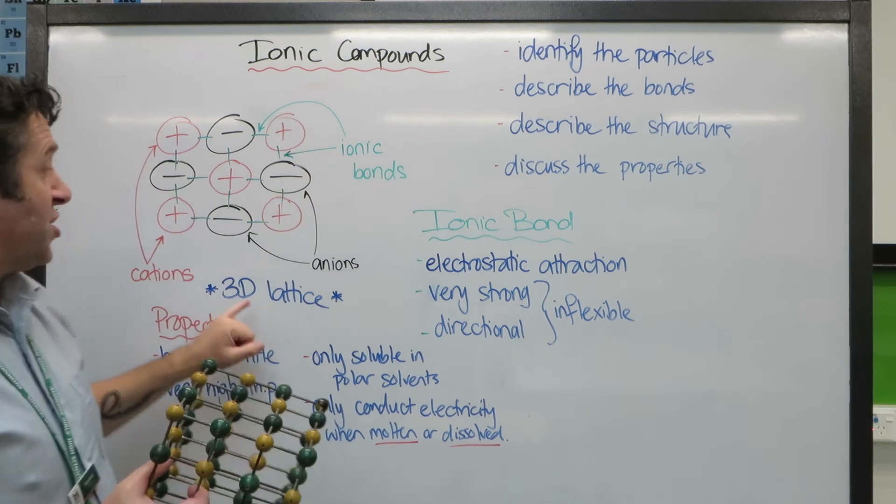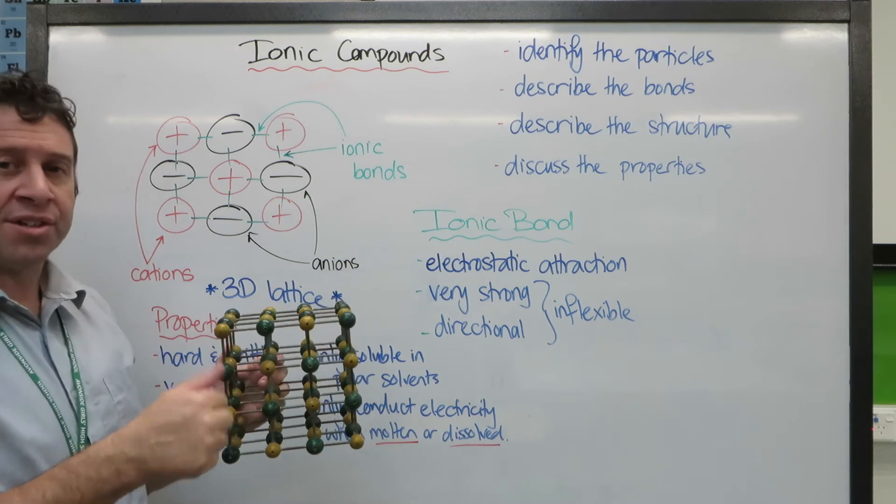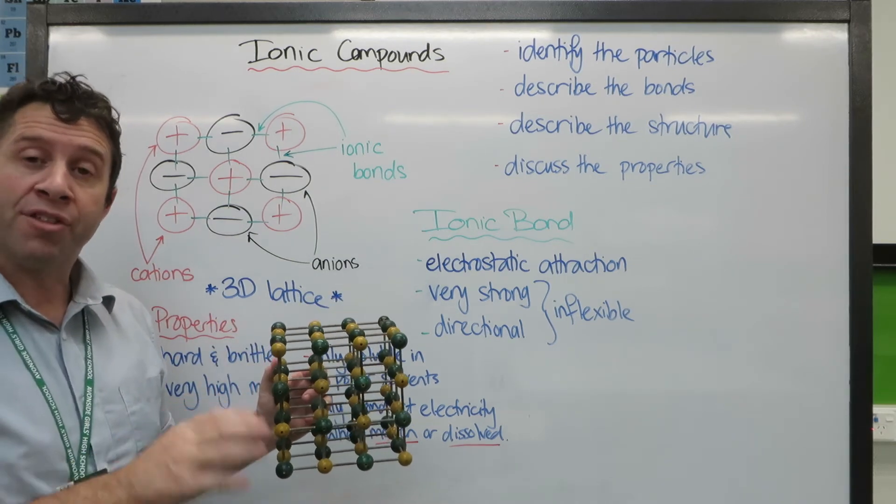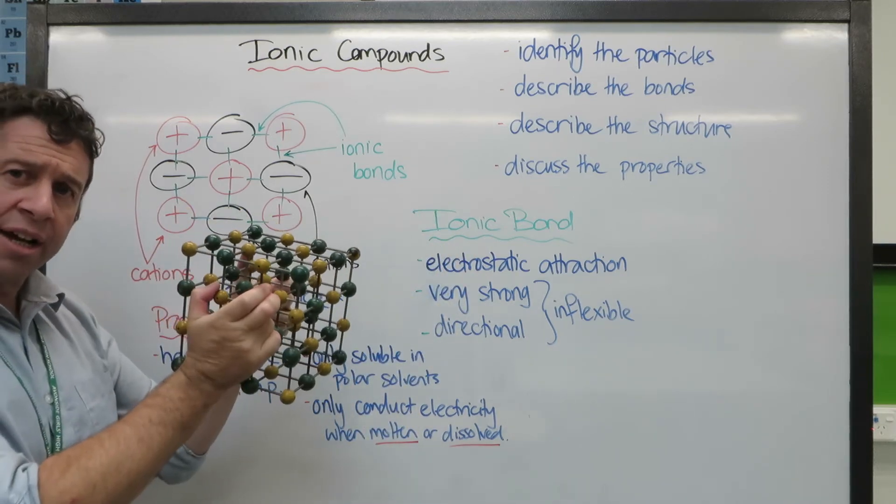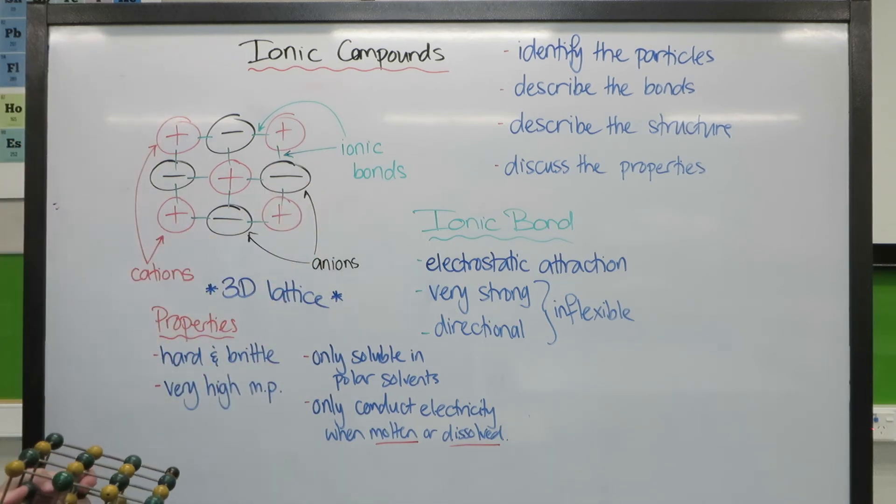We need to be able to describe the structure. That's this word, 3D lattice. So the idea that each ion is bound to multiple other ions, not just one other ion, in a 3D structure. You're not expected to be able to draw the 3D structure in an exam, but you are expected to draw something like this and label it.